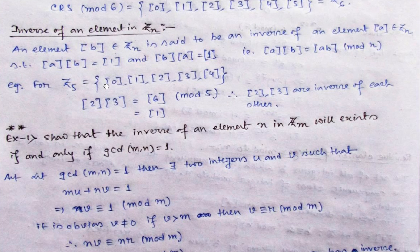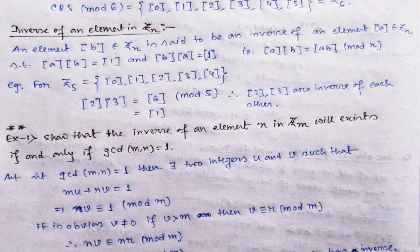For example, in Z_5 there are 5 classes: 0-bar, 1-bar, up to 4-bar. Consider class 2 and class 3 — multiply them to get class 6. Since we are working modulo 5, divide 6 by 5 and get remainder 1. So class 2 times class 3 gives class 1. You might think: class 2-bar contains infinitely many elements and so does class 3-bar, but we simply take the representative elements 2 and 3 and multiply them.